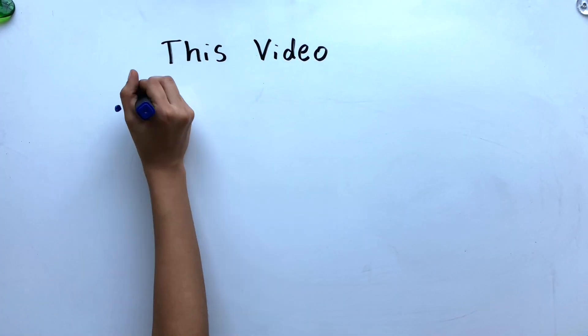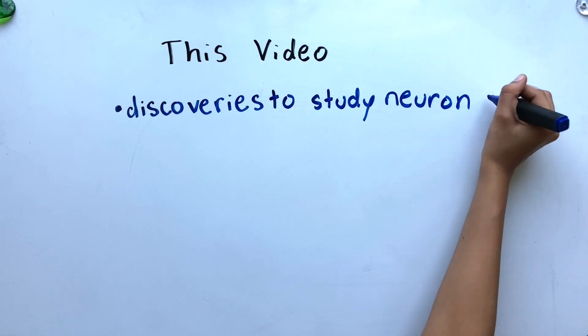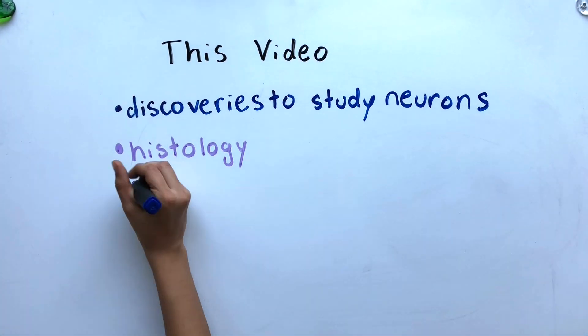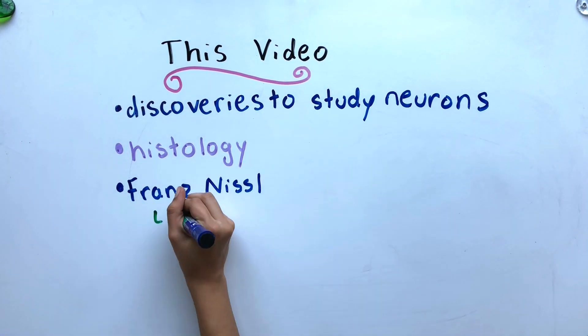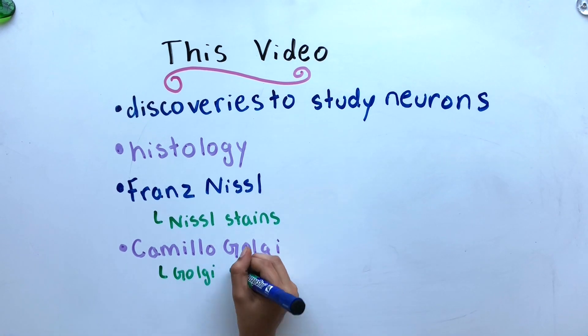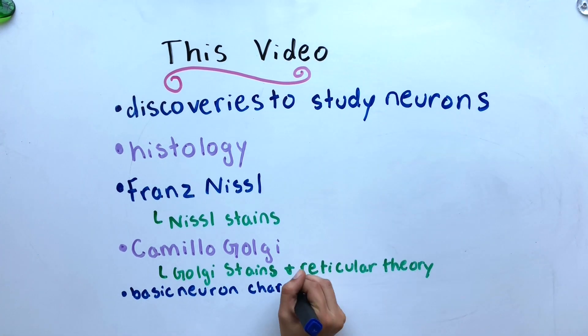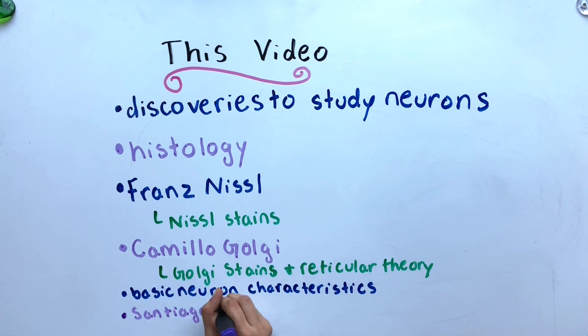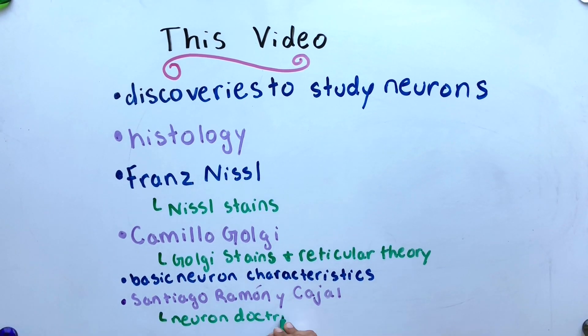This video will cover the discoveries that enabled the study of neurons, the beginnings of histology, Franz Nissel and Nissel stains, Camilo Golgi, Golgi stains and his reticular theory, basic neuron characteristics, and Santiago Ramon y Cajal and his neuron doctrine.